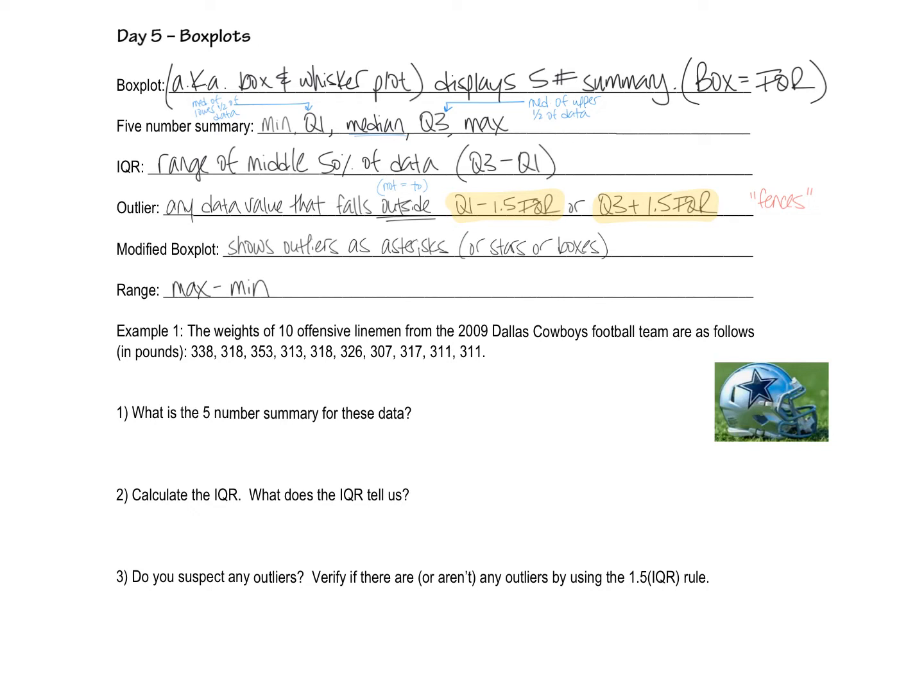And then the range is the maximum minus the minimum. And so what we have here is our very first example. We're going to do some box plot stuff for it. And we're given the weights of 10 offensive linemen from the Cowboys football team 2009, a little bit outdated data. And these are linemen. So there's some pretty big dudes. And here are their 10 weights.